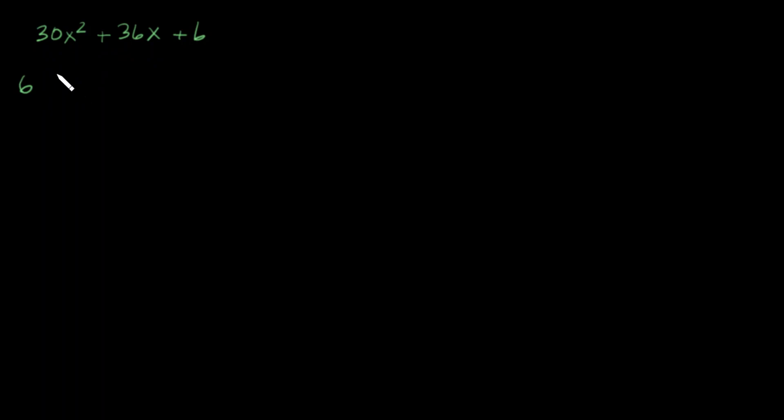When I factor out a 6, it means I am going to divide this by 6, divide this by 6, and divide this by 6. So I end up with 5x squared plus 6x plus 1.